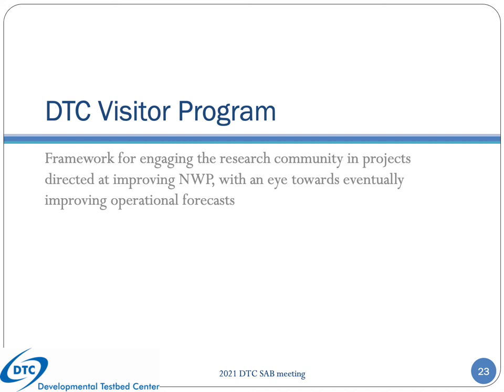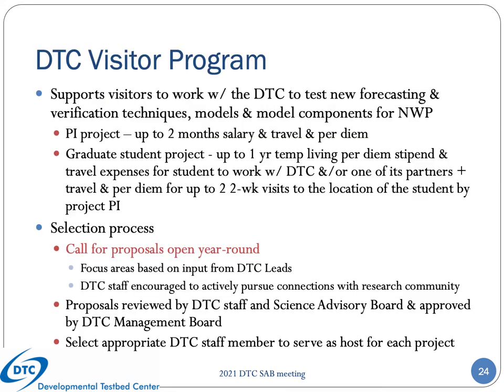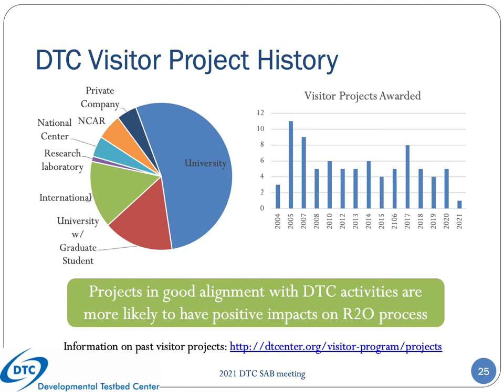The DTC visitor program provides a framework for engaging the research community in projects directed at improving NWP, with an eye towards eventually improving operational forecasts. In its current state, the DTC visitor program supports two types of projects: PI projects or graduate student projects. A call for proposals is open year-round, where the focus areas are periodically updated based on input from the DTC leads. Proposals are reviewed by DTC staff and Science Advisory Board members, and approved for funding by the DTC Management Board. A majority of our funded projects involve the academic community, but participants also include the private sector as well as the international community. Past history has shown us that projects that align with DTC activities are more likely to have a positive impact on the R2O process.